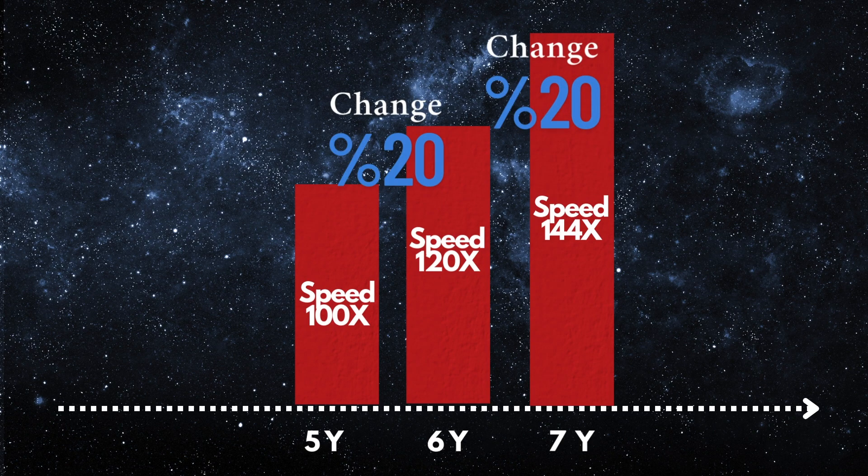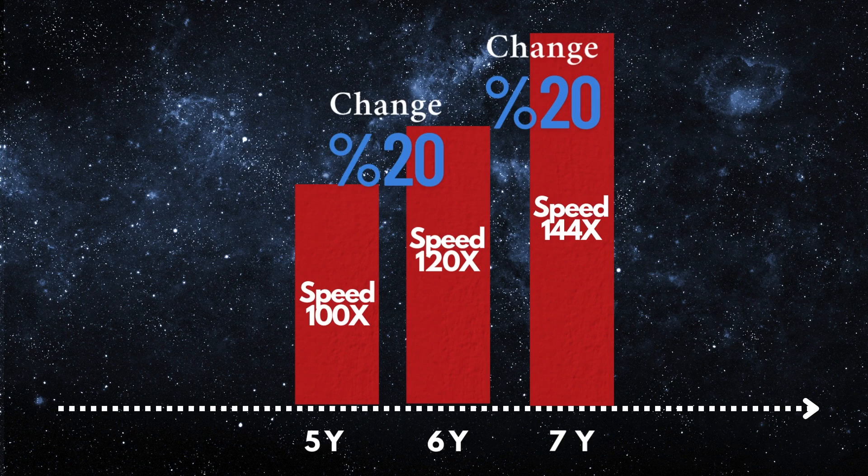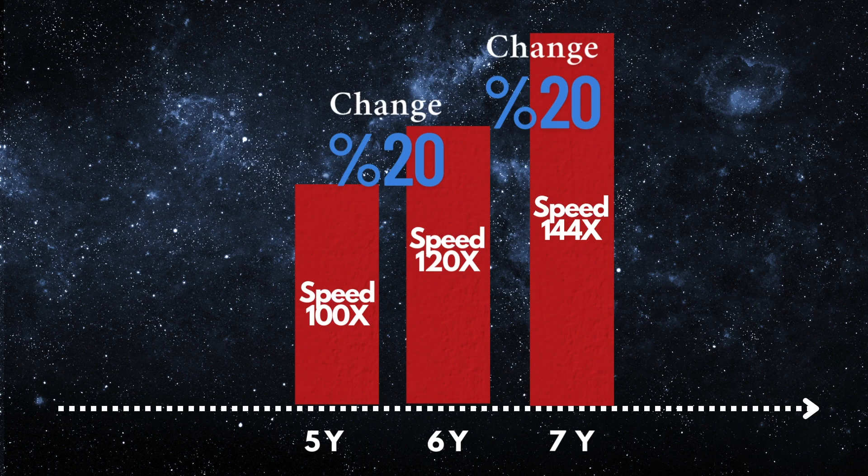Then, as it aged from 6 to 7 billion years, if dark energy density were truly constant, the expansion rate should again increase by another 20%, meaning it would go from 120x to 144x. That kind of uniform percentage increase is what we'd expect if dark energy doesn't change over time.